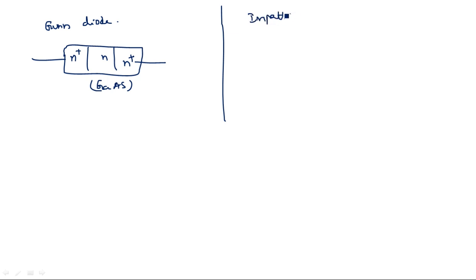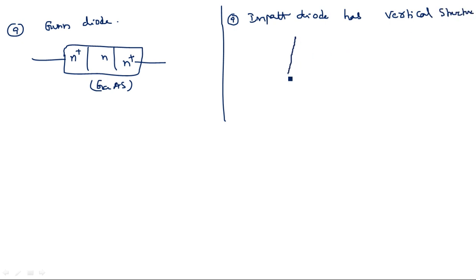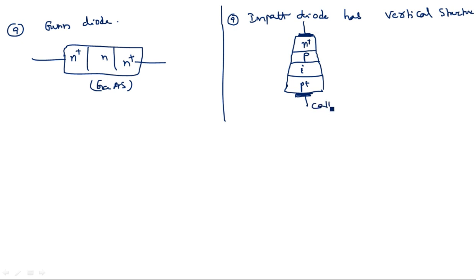The IMPATT diode has a vertical structure, with layers P+, I, N, and N+, and additionally P and P+ regions. This vertical structure has an anode and a cathode terminal. The structure is somewhat different when compared to the Gunn diode.